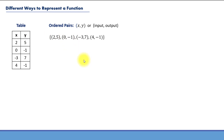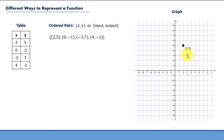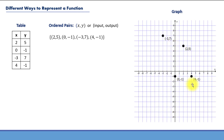We can also use graphs to represent functions. We simply treat these ordered pairs as coordinates of points. So that's going to be the point corresponding to the relation (2, 5) — it has x-coordinate 2 and y-coordinate 5. And here are the rest of the relations. So that's how the graph of this particular function, which has only 4 relations, is going to look like.